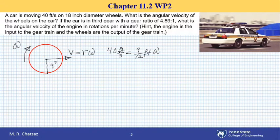And this turns out to be 53.33 radians per second. So this is the velocity of the wheels.